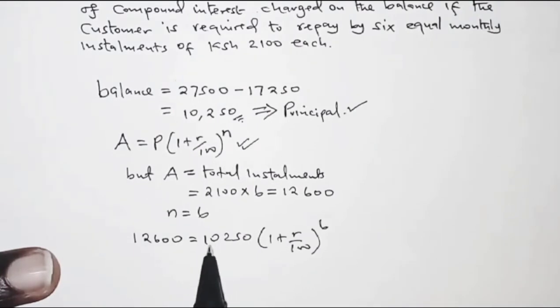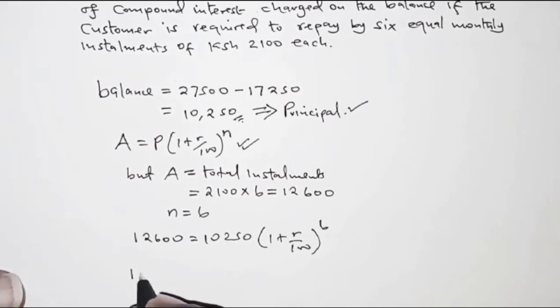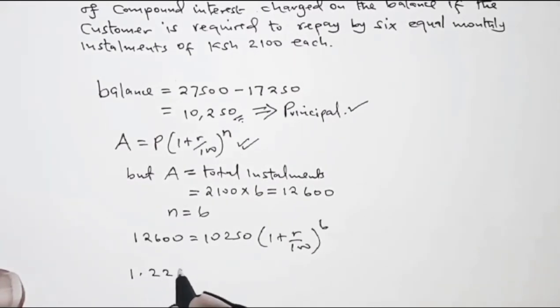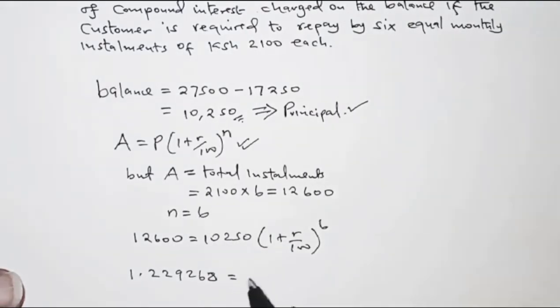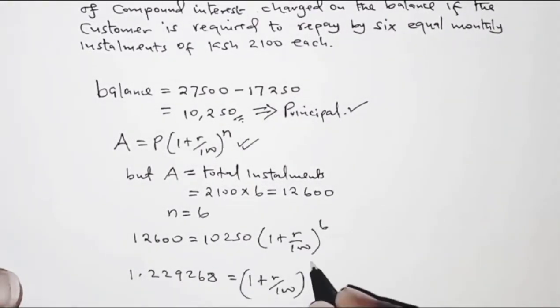So here we can divide both sides by 10,250 and we are going to get on the left hand side 1.229268 and on the right hand side we still have 1 plus r over 100 raised to power 6.